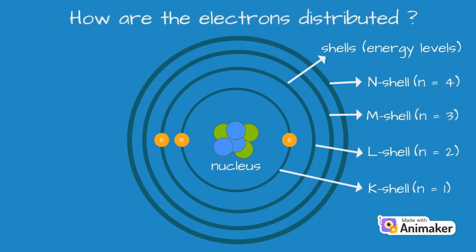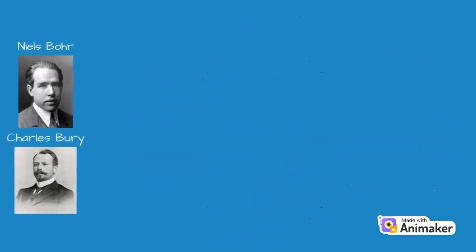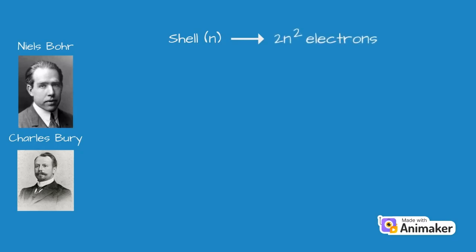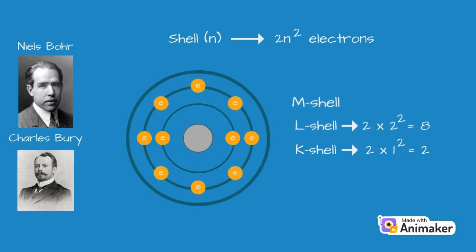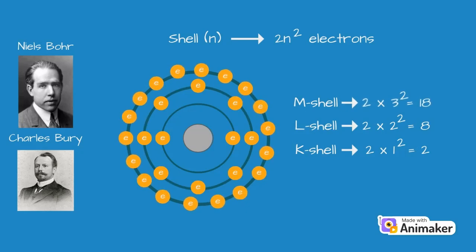But how are the electrons distributed in different shells? Niels Bohr and Charles Burry proposed that each shell N can have a maximum of two N-squared electrons. So, the first shell or the K shell can have a maximum of 2 times 1-squared or 2 electrons. Similarly, the second shell or the L shell can have a maximum of 8 electrons, the third or the M shell can have a maximum of 18 electrons and so on.